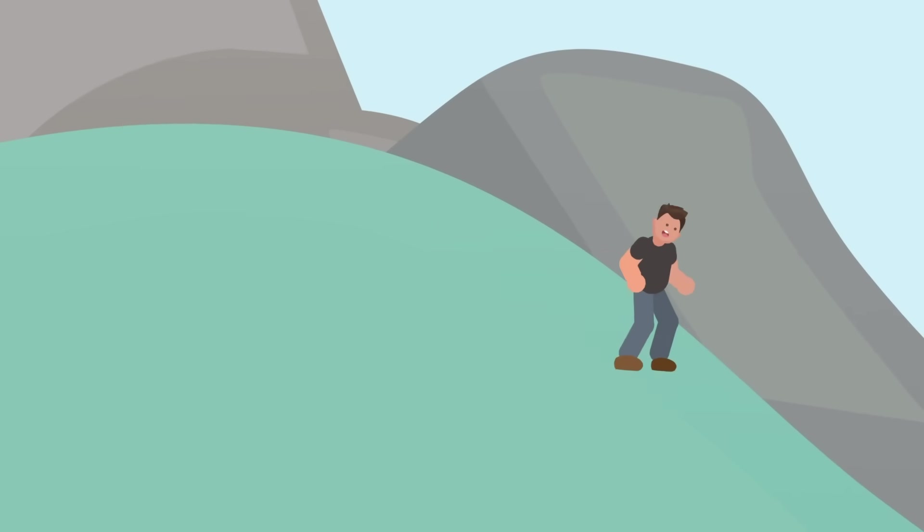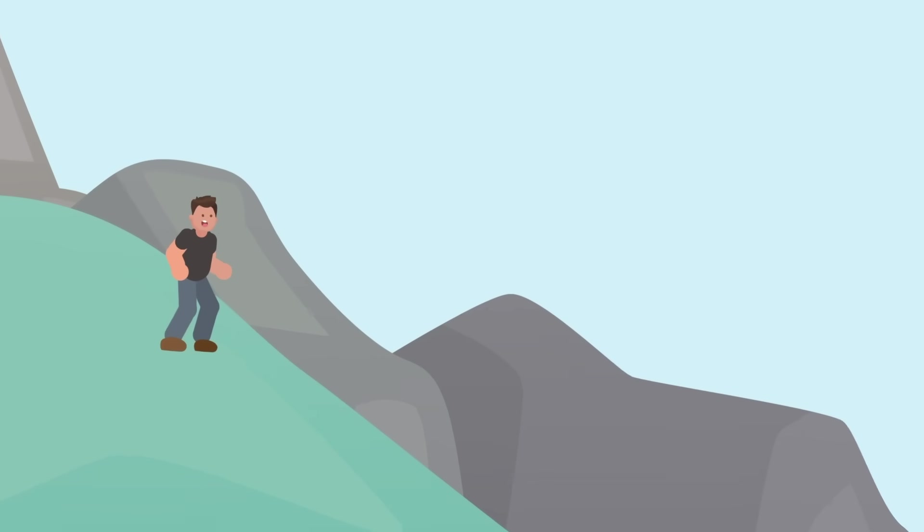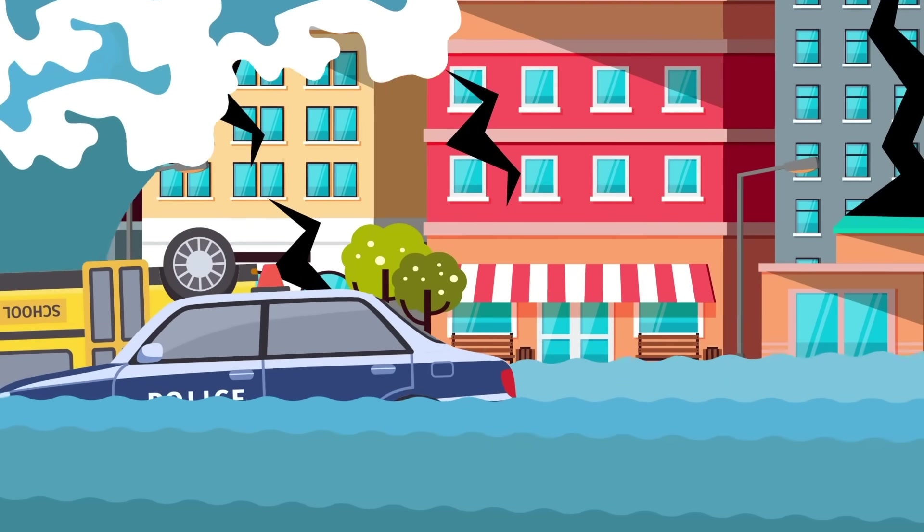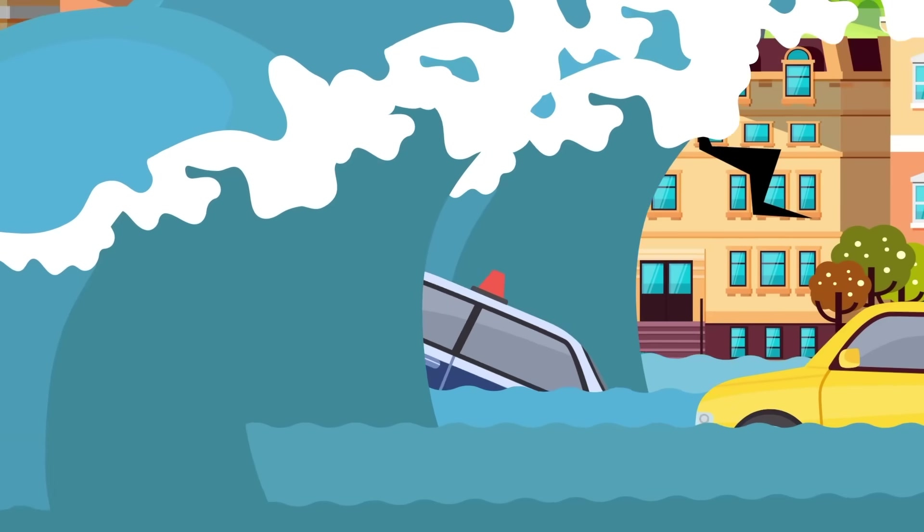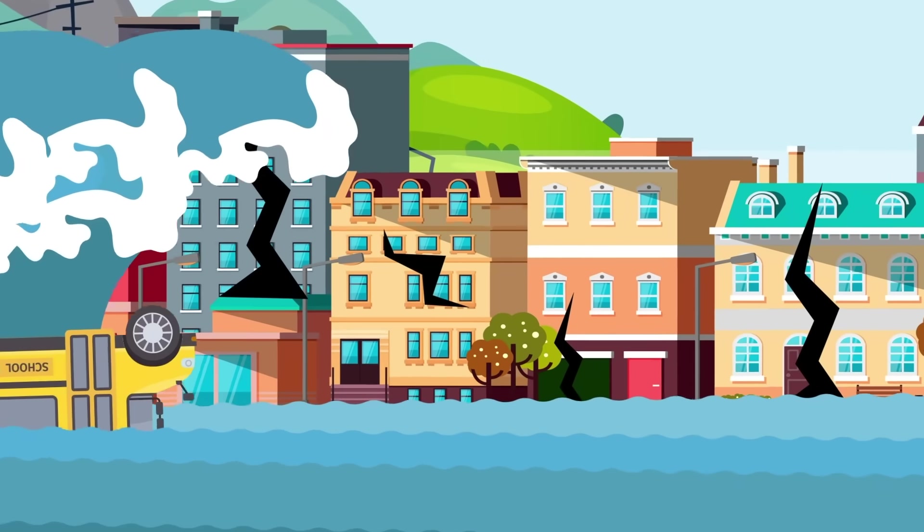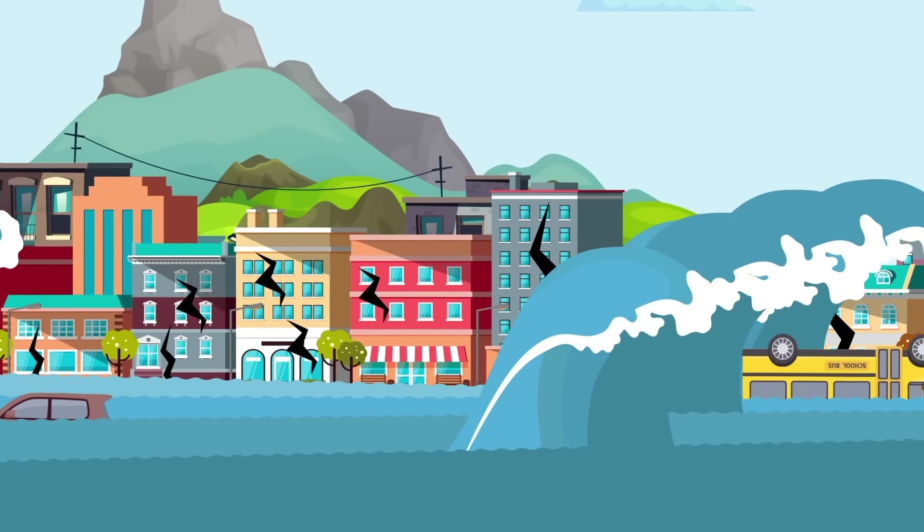You turn around for a second and see that the tsunami has passed the first buildings of the city, and it's no longer just water. The fast-moving wave is pushing along trucks, utility poles, house walls, and a whole pile of massive debris, taking down everything in its path. No human is a match for this.